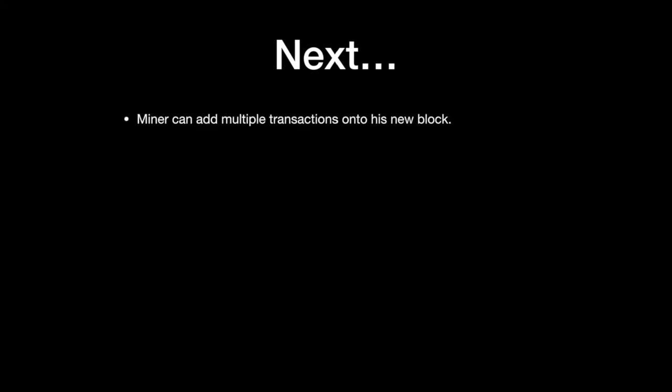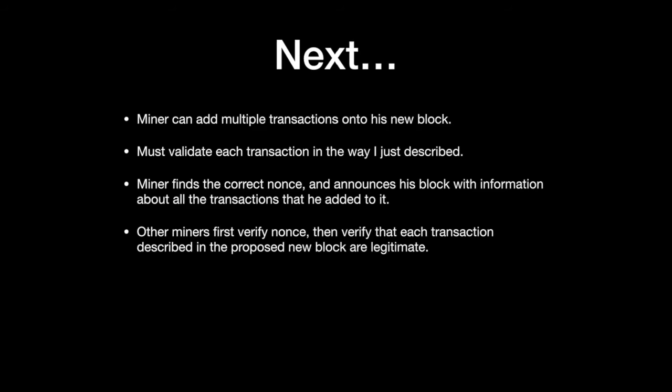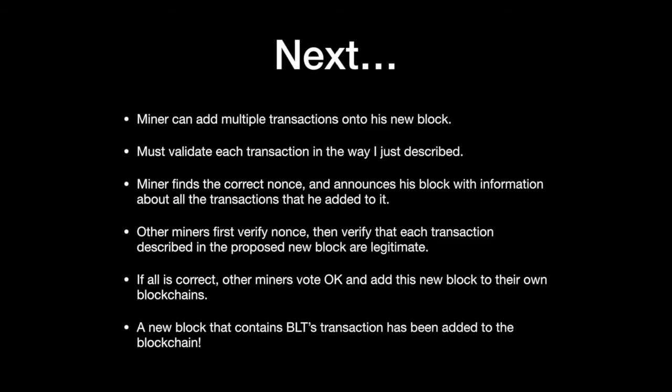A miner can add multiple transactions onto his new block, and must validate each transaction in the way just described. The miner finds the correct nonce and announces this block — with information about all the transactions he added — to the network. Other miners first verify that the nonce is correct, then verify that each transaction described in the proposed new block is legitimate. If all is correct, the other miners vote OK and add this new block to their own blockchains. A new block containing BLT's transaction has now been added to the blockchain.